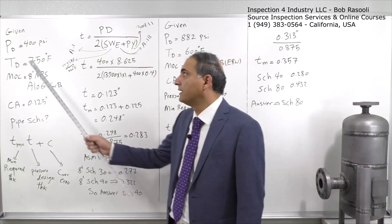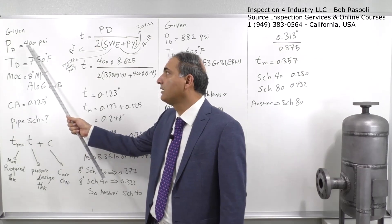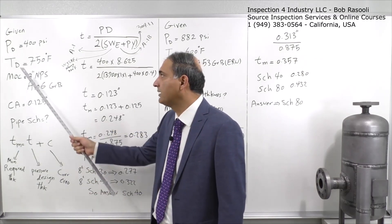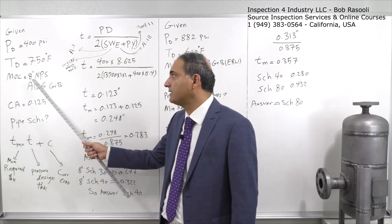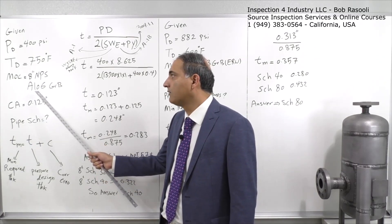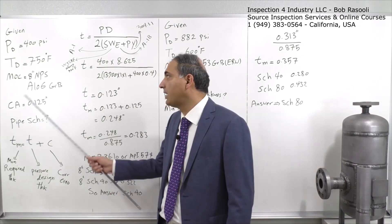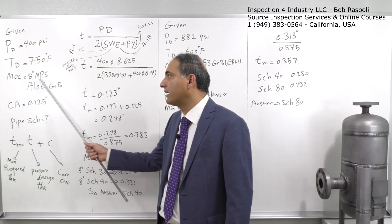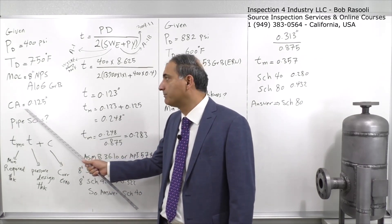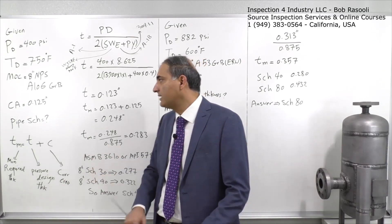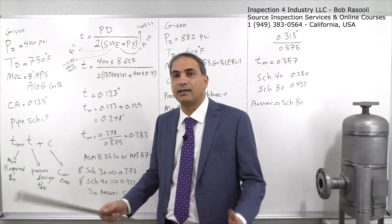Our first problem involves a pipe where the problem provides us with a design pressure of 400 psi. Our design temperature is 750 degrees Fahrenheit, and our material of construction is 8-inch NPS (nominal pipe size) A106 Grade B — a very common seamless process piping material. The problem also provides a corrosion allowance of 0.125 inches and asks us to determine the pipe schedule. No mechanical allowances are given.